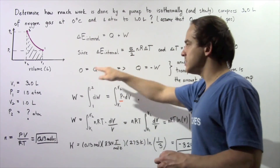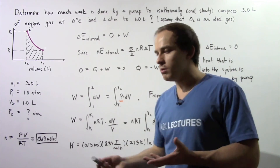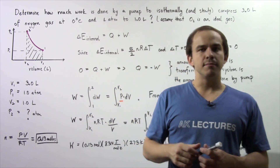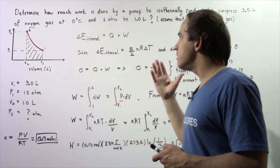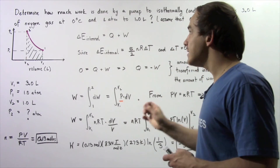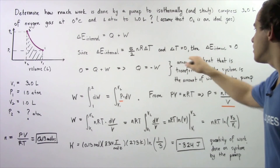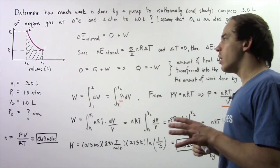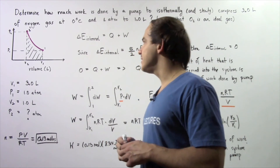With ΔU = 0, the equation becomes 0 = Q + W, which implies Q = −W. This means the amount of heat that flows into our ideal gaseous system equals the amount of work done by the surroundings — our pump — on our system. The pump is our surroundings and the ideal oxygen gas is our system. We now want to calculate how much work the pump does on the ideal gas to compress it.